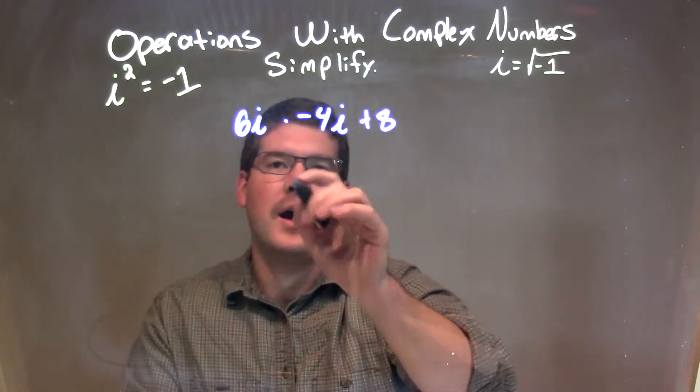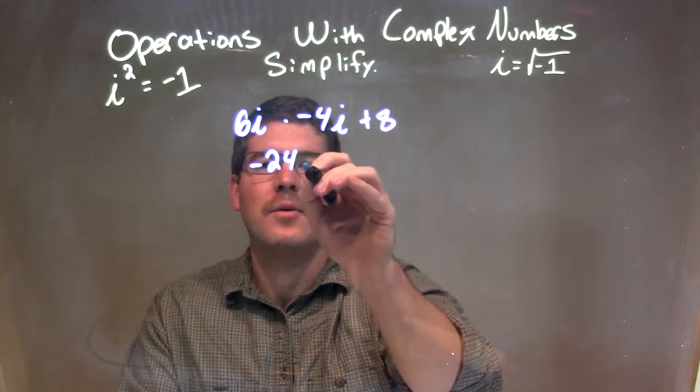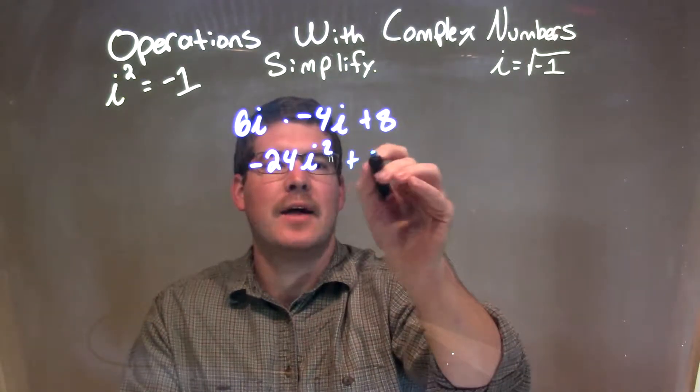6i times negative 4i is negative 24i squared, right? And we bring down the 8.